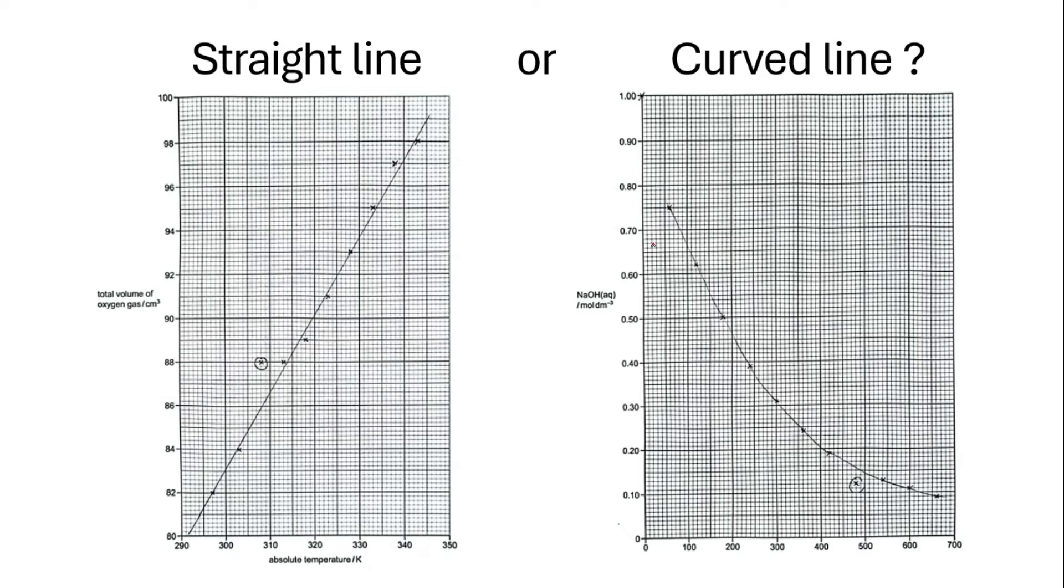Same goes to the one on the right-hand side, the curve line. There's only one point that's more than two small squares away from your line of best fit.